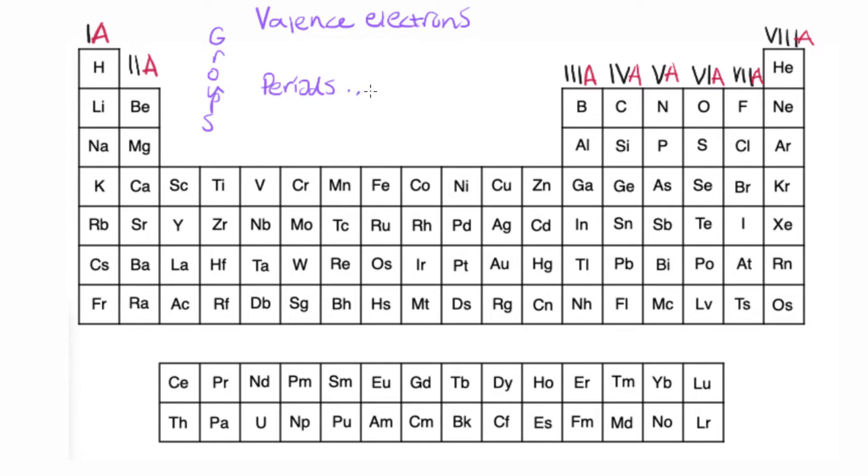So you can think of periods like in a sentence you would read that left to right, whereas the groups you can think of as growing up. So these would be the columns that are going up and down. The G for growing.